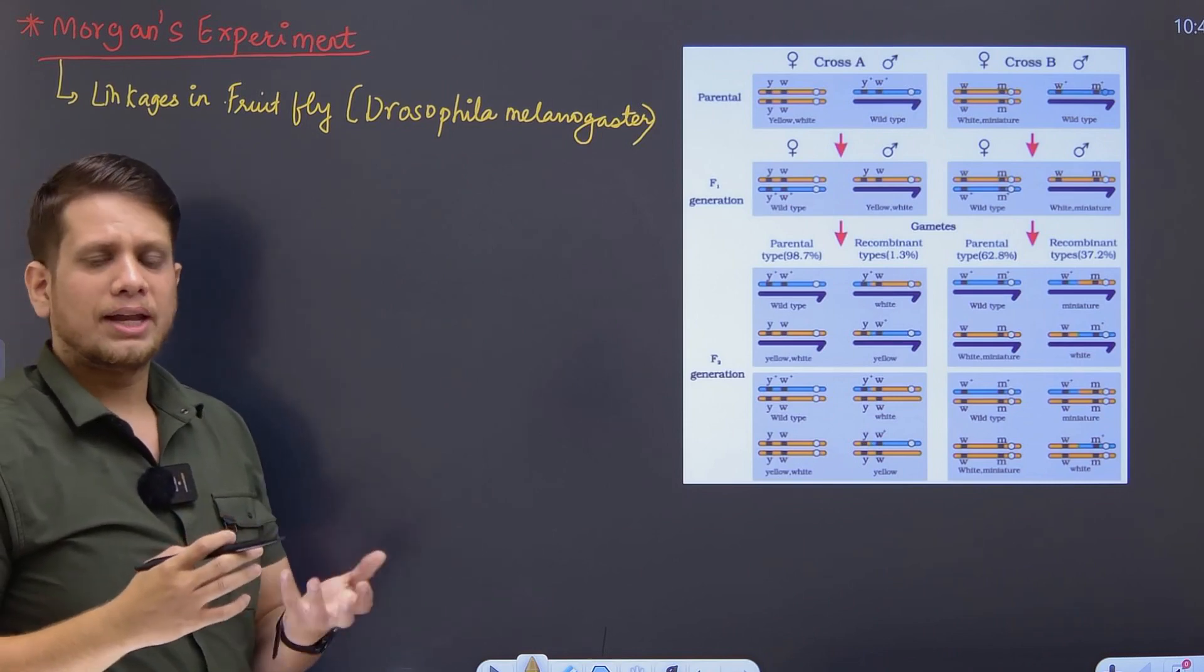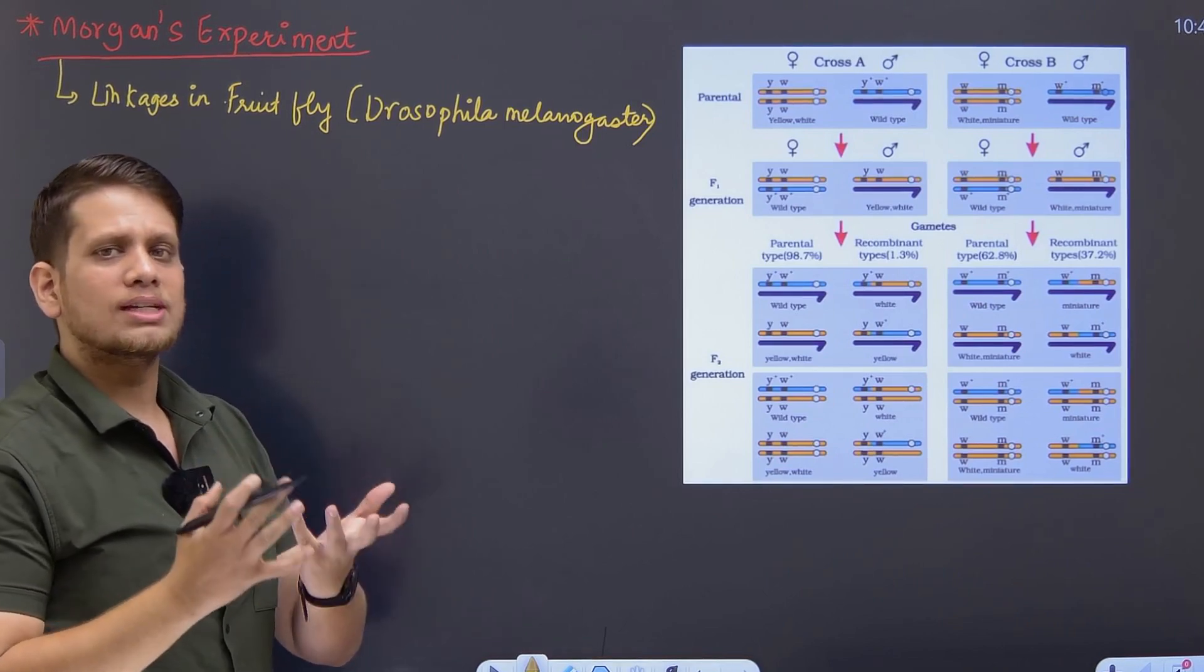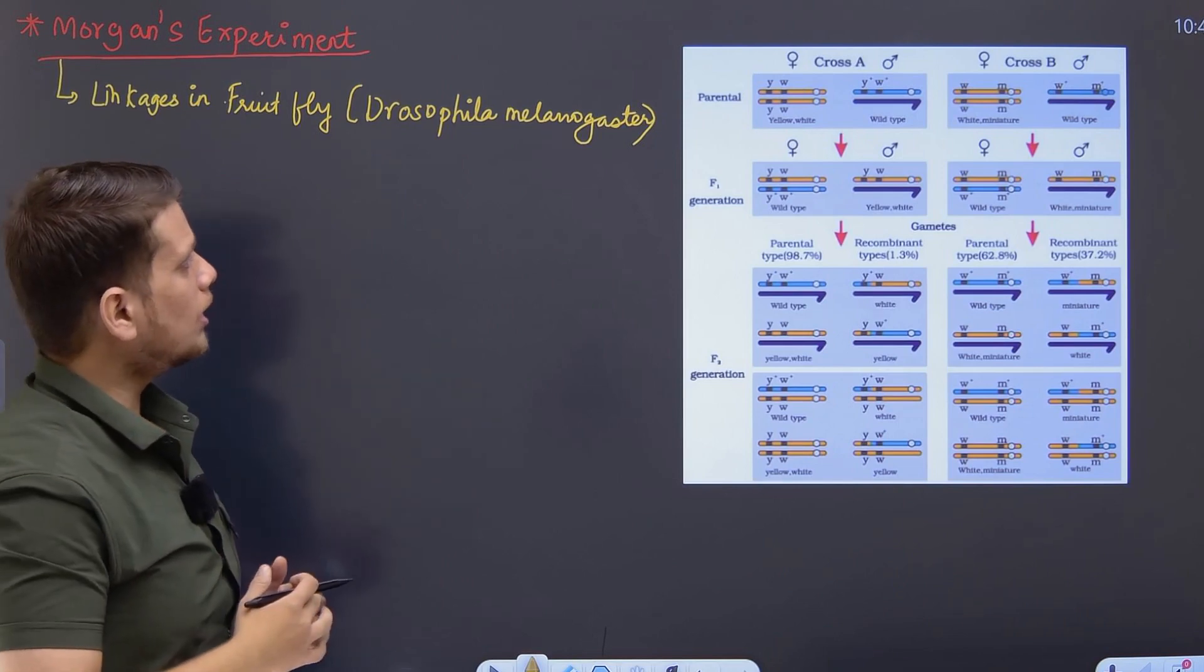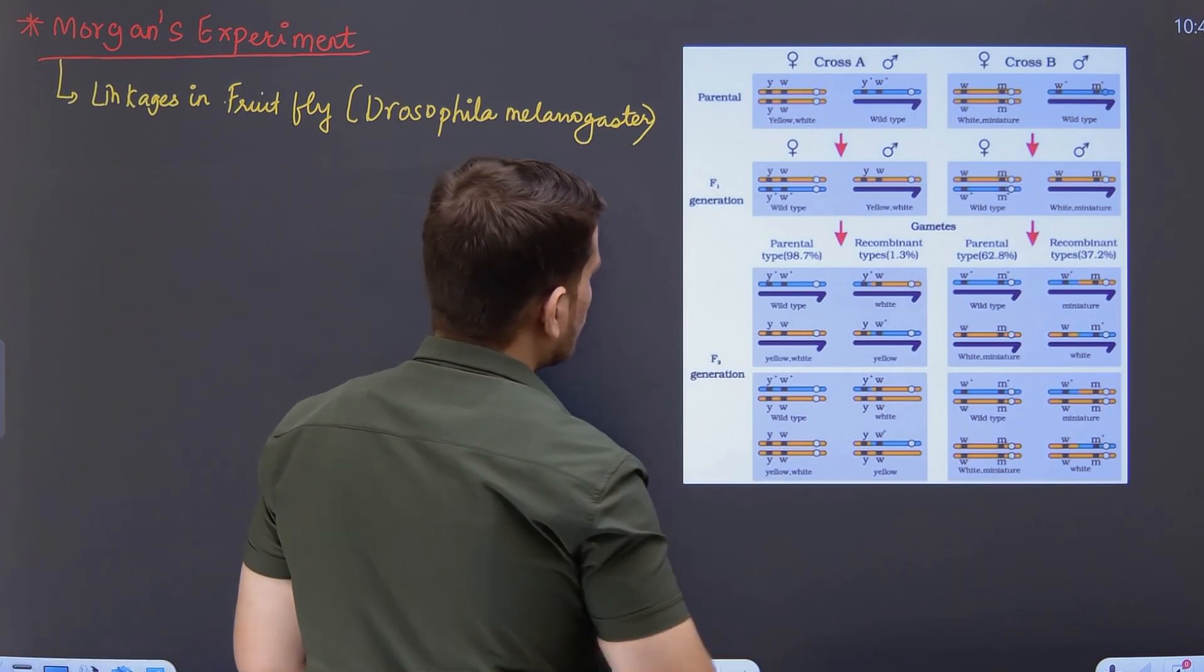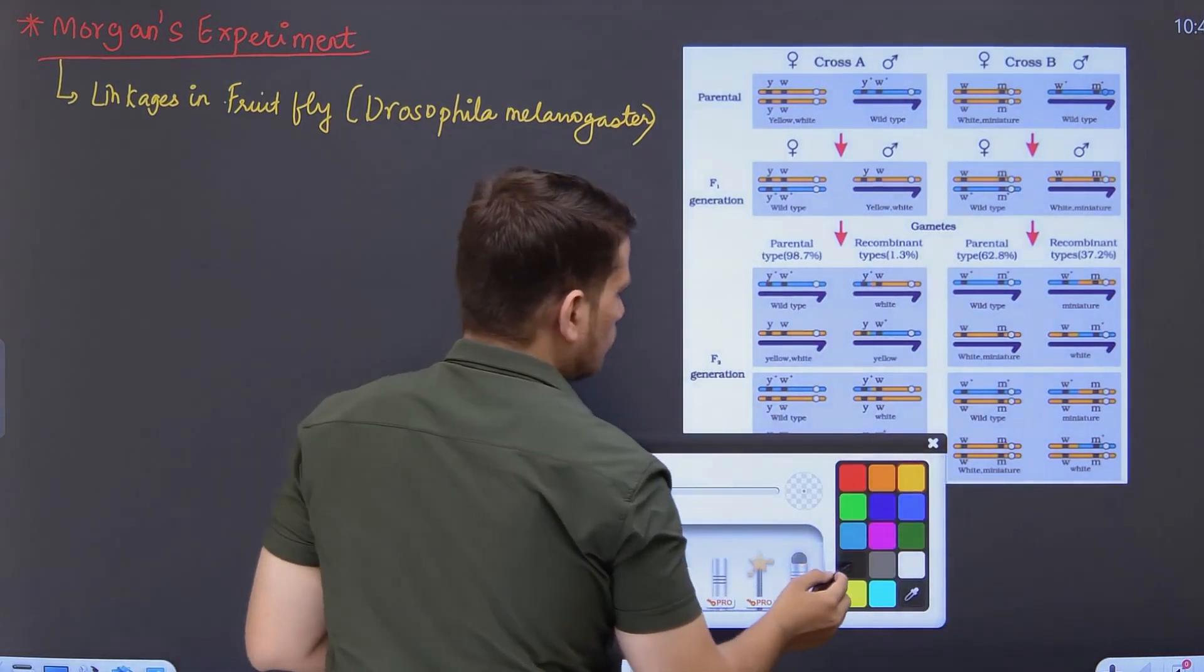This fruit fly was experimented upon for the concept of linkages. And now, what was exactly linkage? Linkage, as I know, is an association of two genes. So Morgan has done a different experiment with two types of crosses. Now look at it very carefully. We performed two crosses.